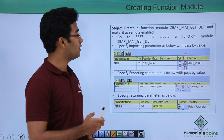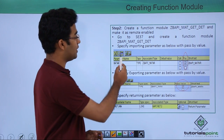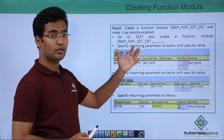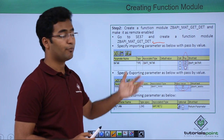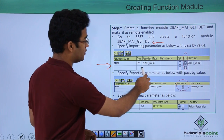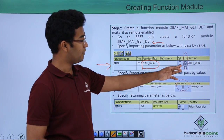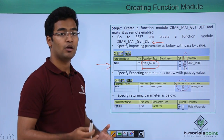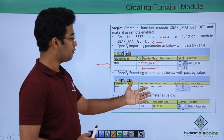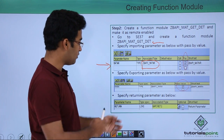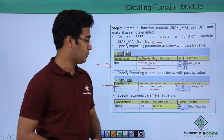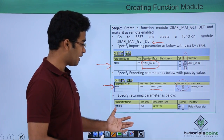Now we will create our function module, and for that we have to go to SE37, that is our function builder. Here we have created this particular function module: ZBAPI_MAT_GET_DET. Since we are making our function module, we have to specify our importing and exporting parameters. For importing, we are passing the parameter name as MATNER with associated type ZBAPI_MATNER, and we have to make it pass by value, since pass by reference is not supported in BAPIs. Then we specify the exporting parameter with the parameter name MARA, which is of type ZBAPI_MARA, also pass by value.